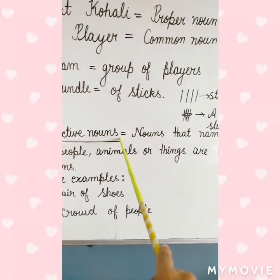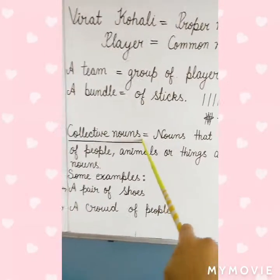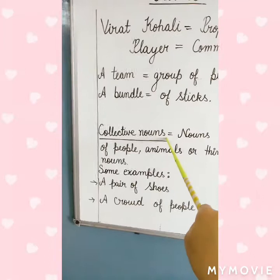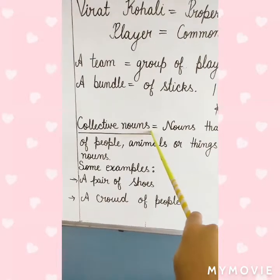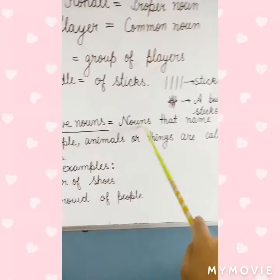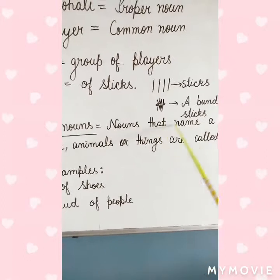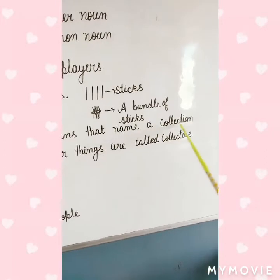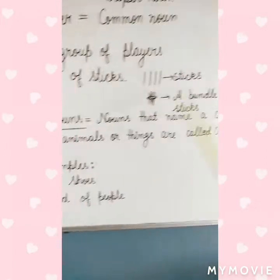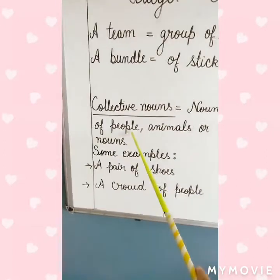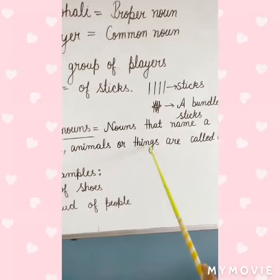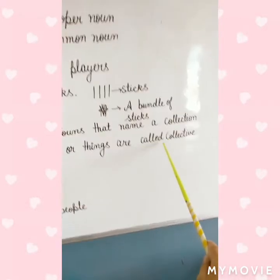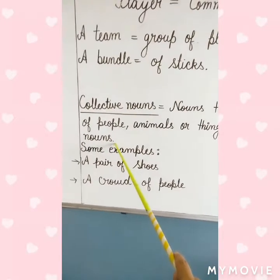Look at here — collective nouns. Collective nouns, or group nouns, are nouns that name a collection of people, animals, or things. They are called collective nouns.